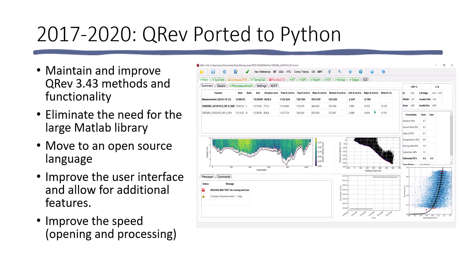In 2017, we realized that we were beginning to hit the limitations of the MATLAB development and decided to port QREV to Python. This would allow us to maintain and improve the previously coded methods and functionality. It would eliminate the need for a large MATLAB library. It would move us to an open source language and remove the dependency we had on proprietary software. This would also allow us to modernize and improve the user interface and allow for additional features. In addition, we could improve the speed of opening and processing the measurement.